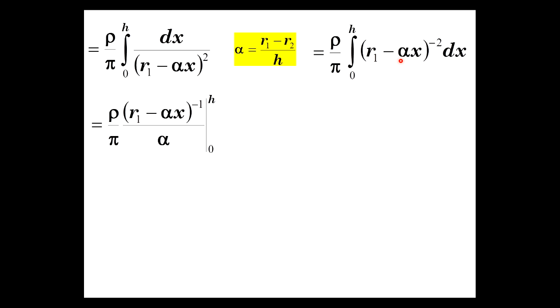And when we integrate that, the negative 2 becomes negative 1. Divide by another negative, and the negatives go away. We get this result.